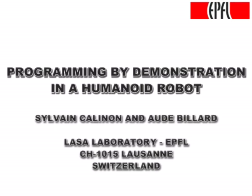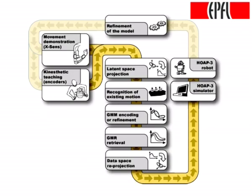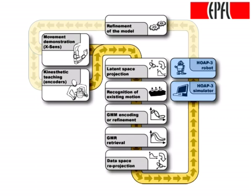In a Programming by Demonstration framework, the robot learns new skills by observing multiple demonstrations of a similar task. In the Demonstration phase, the robot observes the user performing the skill. In the Encoding phase, a probabilistic model encapsulating the essential features of the gestures is created or updated. In the Reproduction phase, a generalized version of the gestures is retrieved by a dynamic simulator or by the robot.